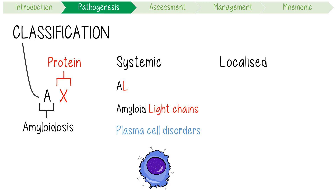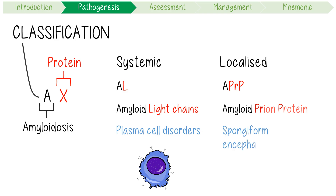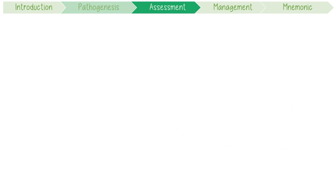AL can have multi-organ involvement, so it's classified as a type of systemic amyloidosis. Conversely, APrP stands for amyloid prion protein, and it's specifically associated with CNS disease, causing clinical syndromes like spongiform encephalopathies. Thus, it's classified as a localized amyloidosis.